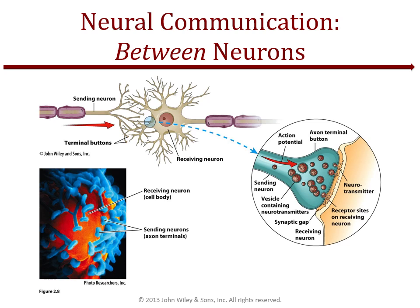When the action potential reaches the branching axon terminals, it triggers a terminal button at the axon's end to open and release thousands of neurotransmitters into the synapse. The synapse is that tiny little opening between the sending and receiving neurons. These chemicals then move across the synaptic gap and attach to membranes of the receiving neuron.